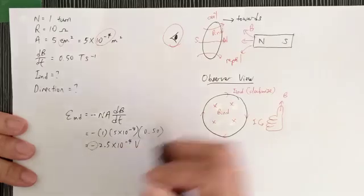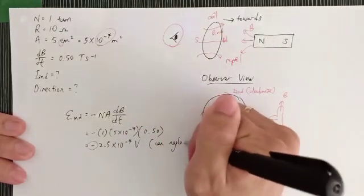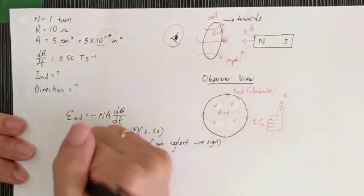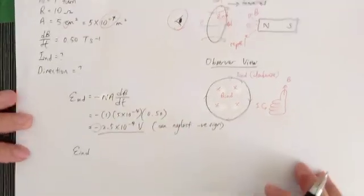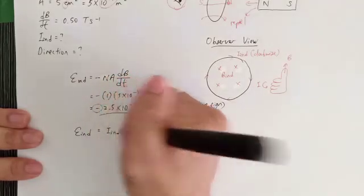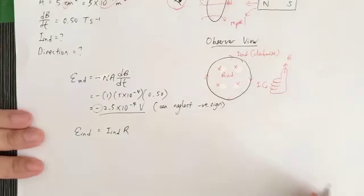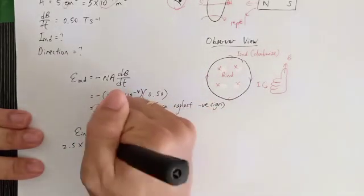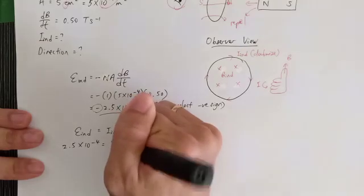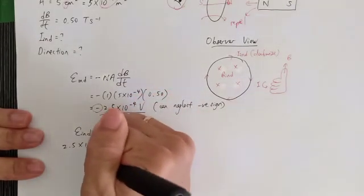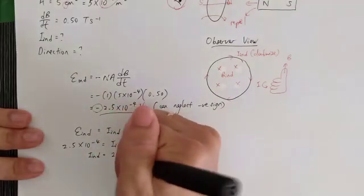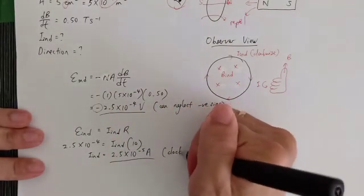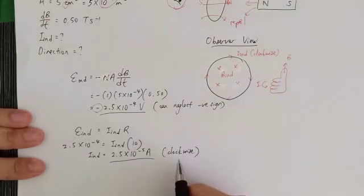The negative sign can be neglected since we only want the magnitude. Using E = IR, we substitute the induced EMF of 2.5 × 10⁻⁴ V and the resistance of 10 ohms. This gives an induced current of 2.5 × 10⁻⁵ amperes, and the direction is clockwise as observed by the observer.